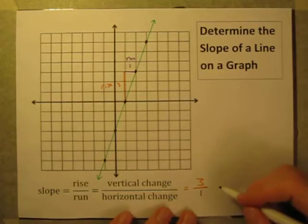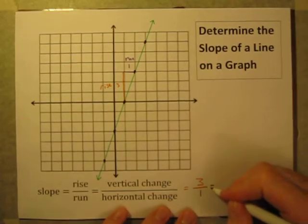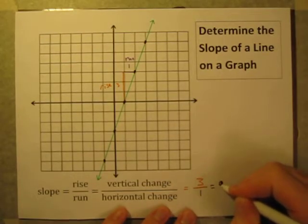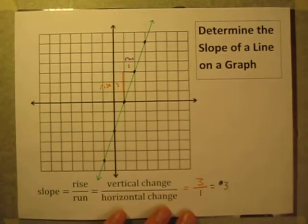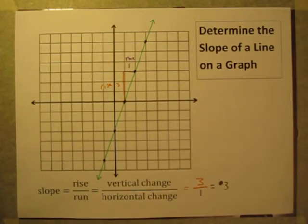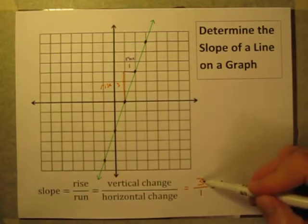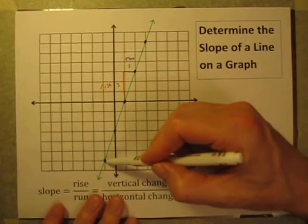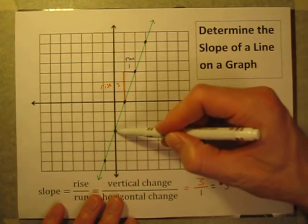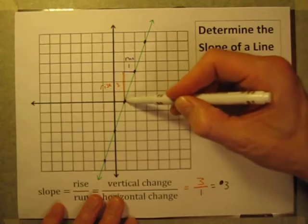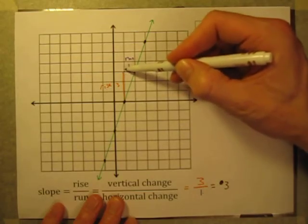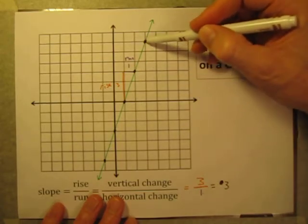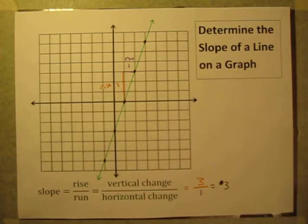Three over one is just three. That means for every step to the right, we go up three. Up three, right one — every time. You can verify this pattern repeating across the entire line. That is the slope of the line.